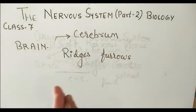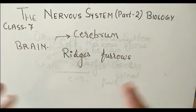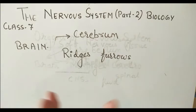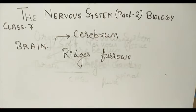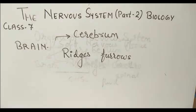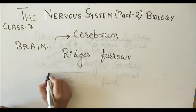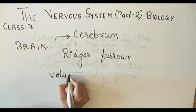The two hemispheres are connected by the longitudinal fissure. Now, the function of the cerebrum — the cerebrum is the seat of many functions. All logical and reasoning functions are performed here. The cerebrum is related to voluntary actions, which are actions that are in our control.